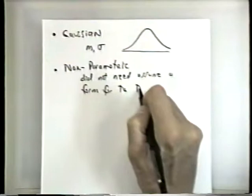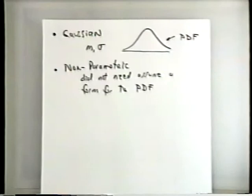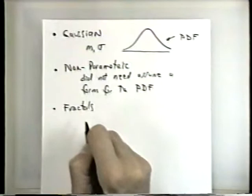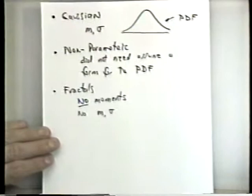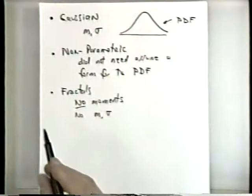So in the Gaussian case, the PDF was Gaussian. Then we went on to expand this to fractals, where there are no moments — no means and variances. And now we're going to take a slightly different approach, which is not more general than fractals, but different.